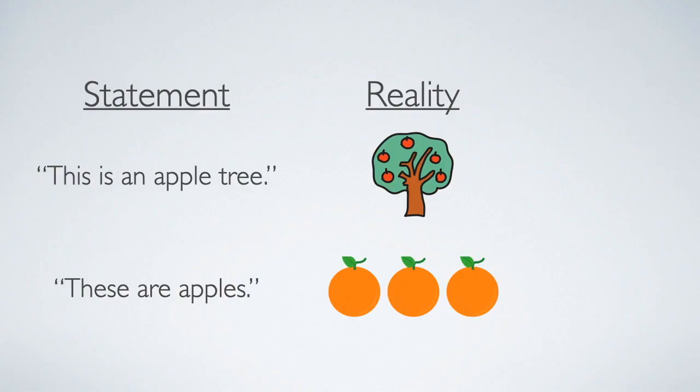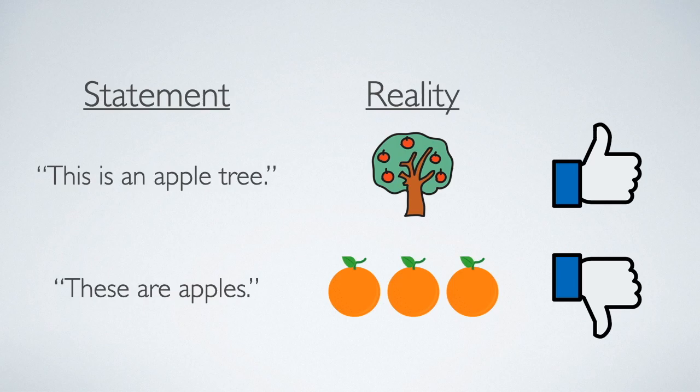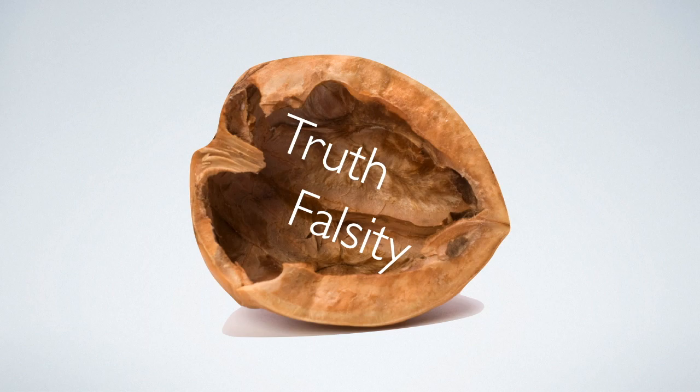And of course, when you describe the way things are, you can either get it right, so that your statement matches reality, or you can get it wrong, so that your statement does not match reality. That, in a nutshell, is truth and falsity.